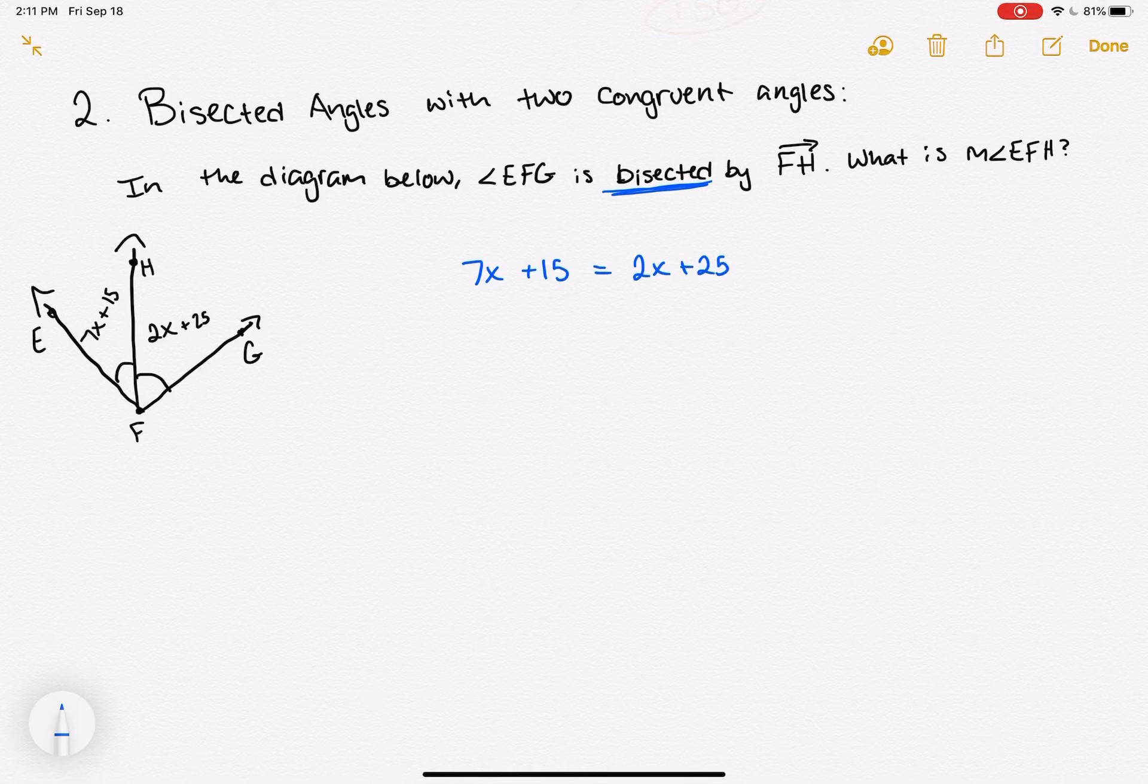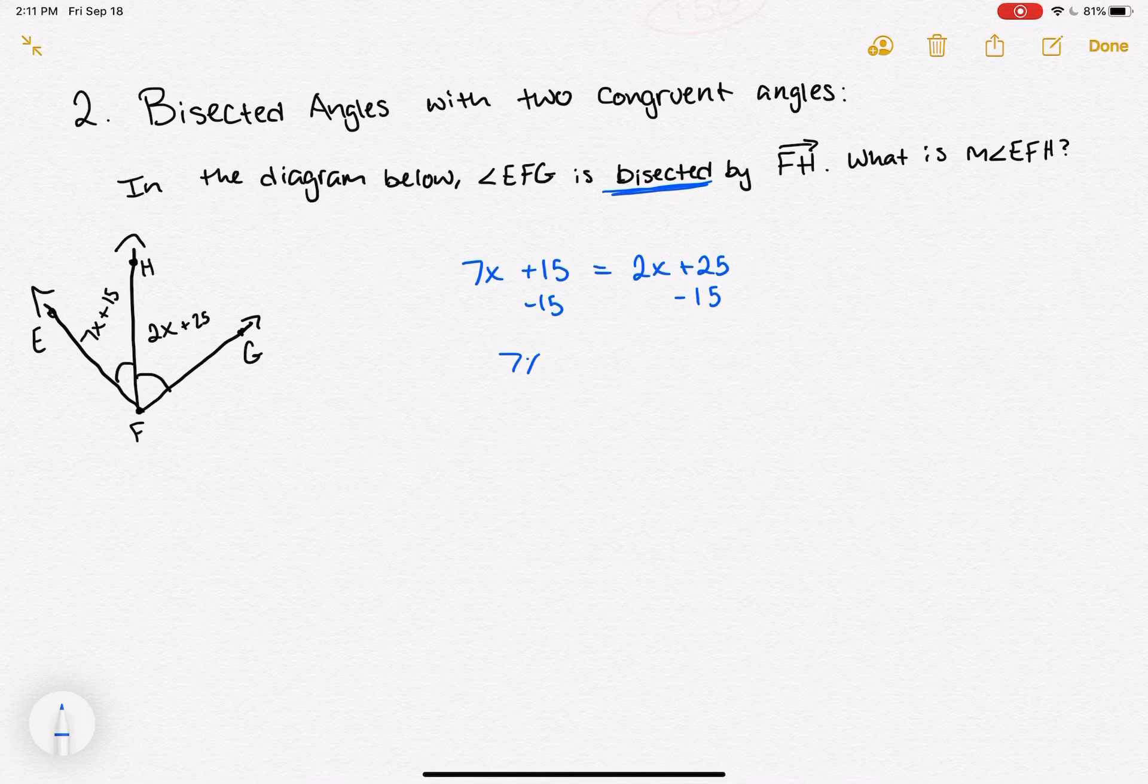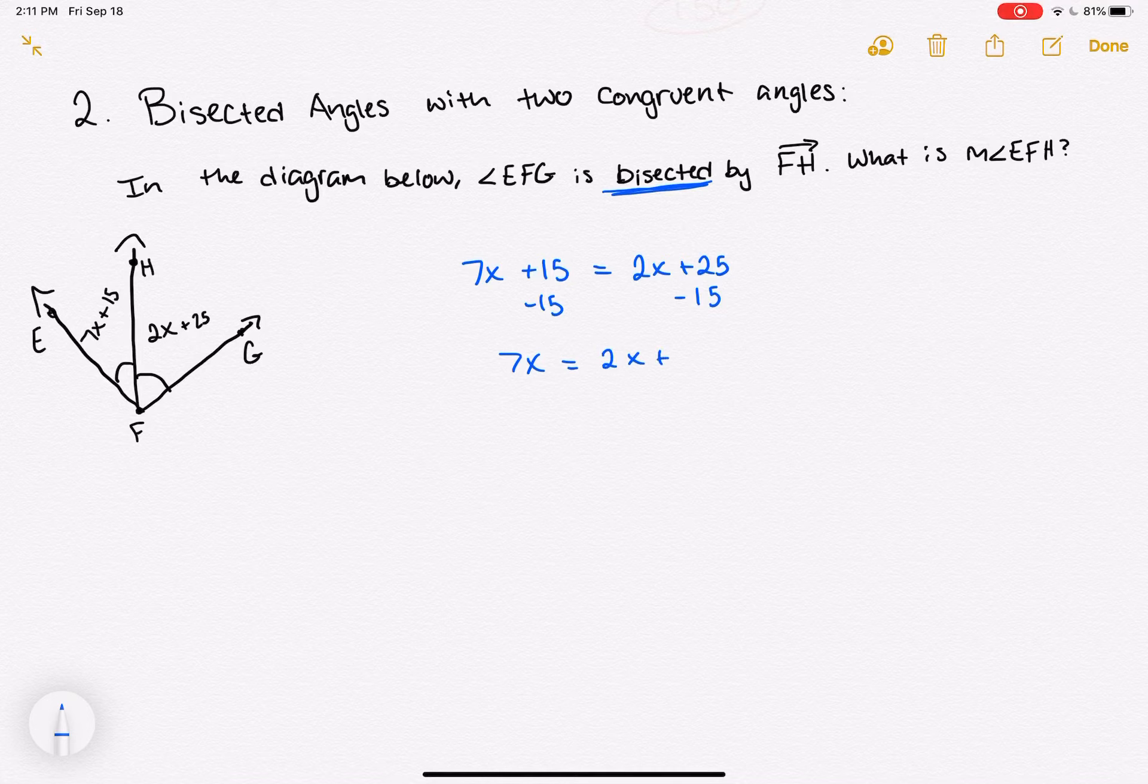Now that we have this set up, we're going to start by solving for x. I'm going to subtract 15 from both sides. That gives me 7x is equal to 2x plus 10.